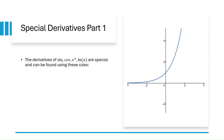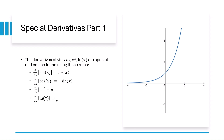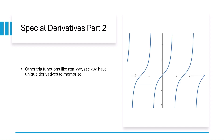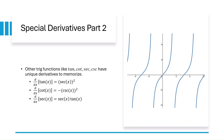Note the derivatives of common trig and exponential functions. The derivative of sine is cosine. The derivative of cosine is negative sine. The derivative of e to the x is itself. And the derivative of the natural log of x is 1 over x. You also have to memorize the derivatives of the other trig functions. The derivative of tangent is secant squared. The derivative of cotangent is negative cosecant squared. The derivative of secant is secant times tangent. And the derivative of cosecant is negative cosecant times cotangent.